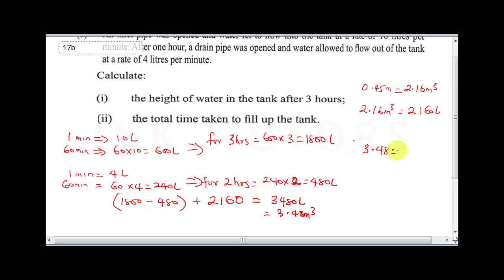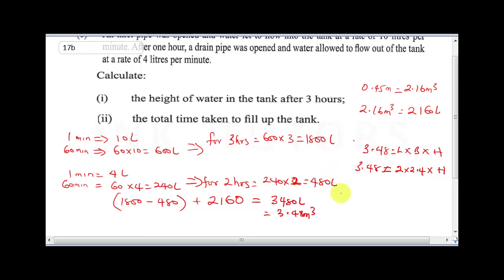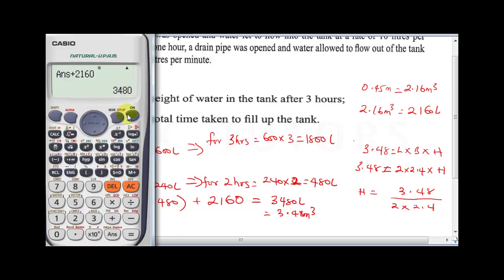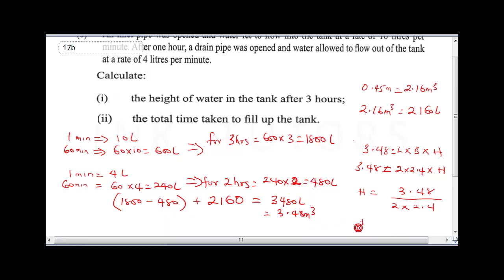Height equals 3.48 divided by (2 times 2.4). Using the calculator: 3.48 divided by 2 times 2.4 gives 0.725 meters. So the height of water in the tank after three hours is 0.725 meters.